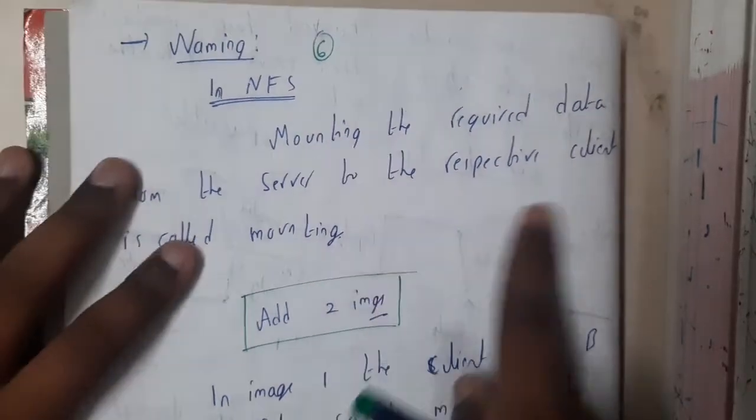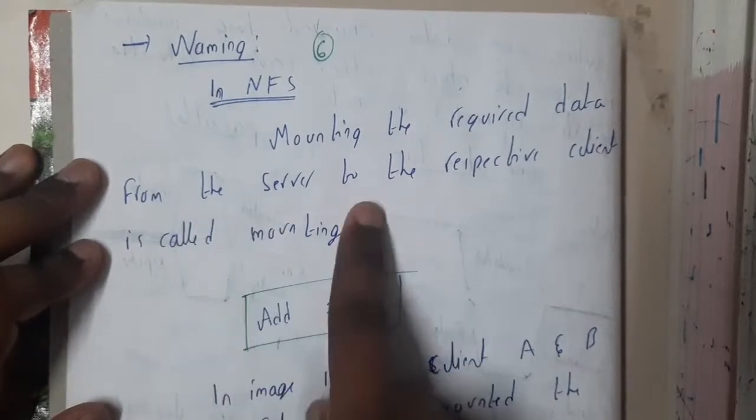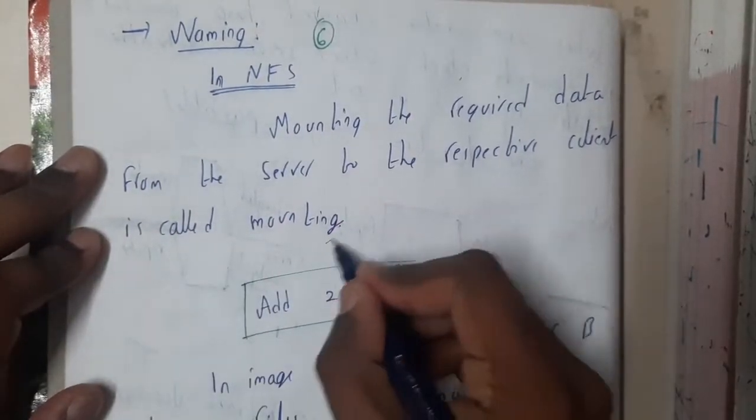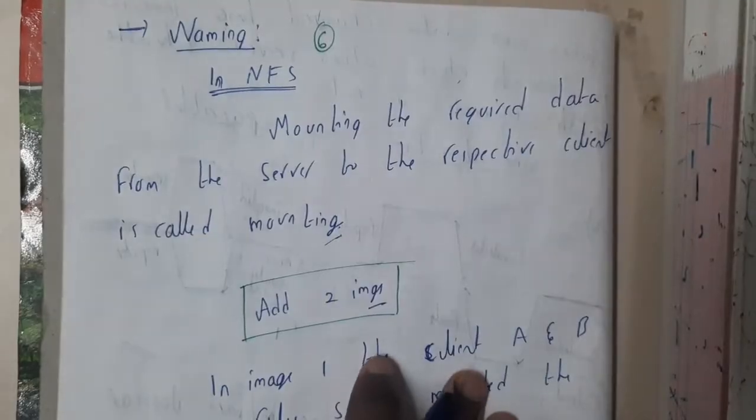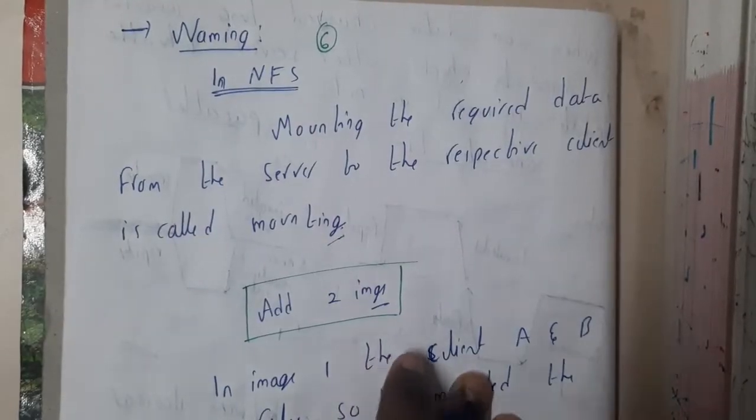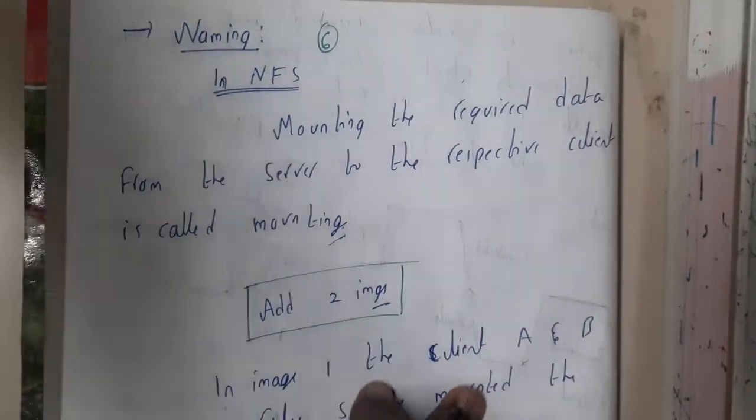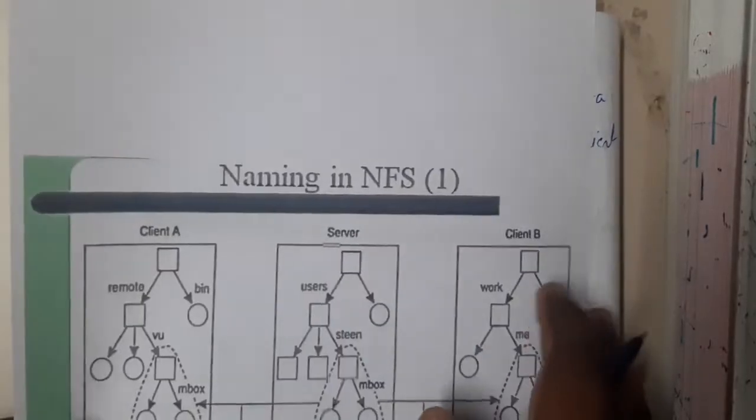So mounting the required data from the server to the respective client is called as mounting. I'll be taking an example diagram so don't worry. This is the first type of mounting.